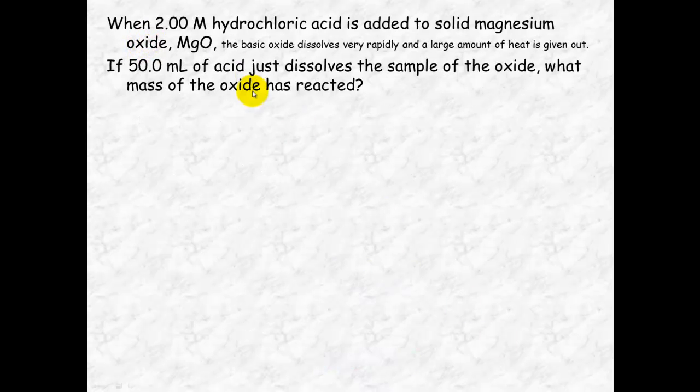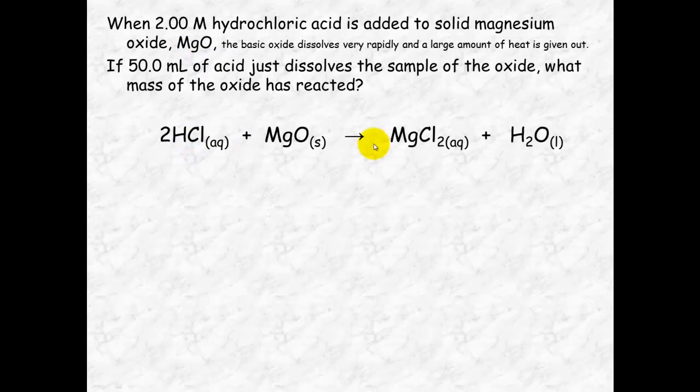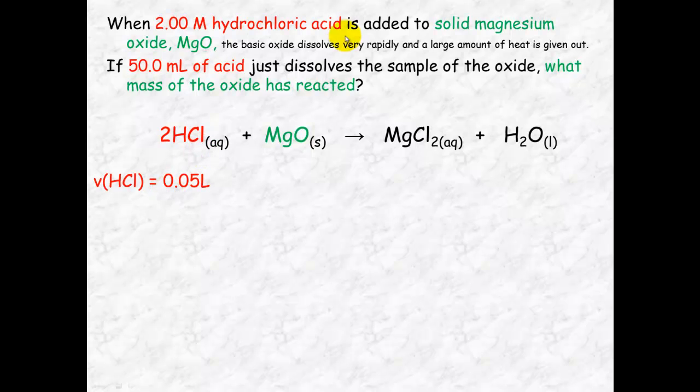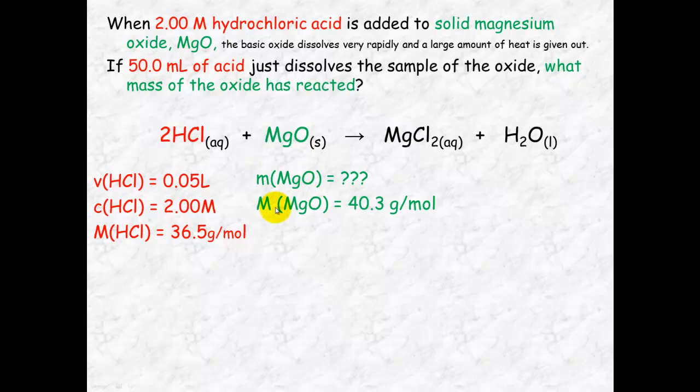So here's our question and the first thing we need to do is look at the important information. We're given our chemical equation so that bit's done for us. I've got 2.00 molar of hydrochloric acid with a volume of 50 mL. So there's my concentration and there's my volume of my known substance. Unknown is my magnesium oxide. And I'm trying to calculate the number of mole of magnesium oxide. I know the molar mass of magnesium oxide. I also know the molar mass of hydrochloric acid by looking at the periodic table. So I write those down.